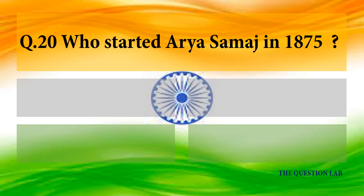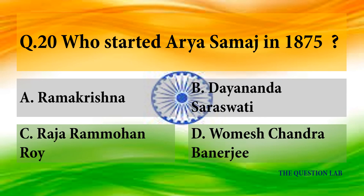Q20. Who started Arya Samaj in 1875? Answer: Dayanand Saraswati.